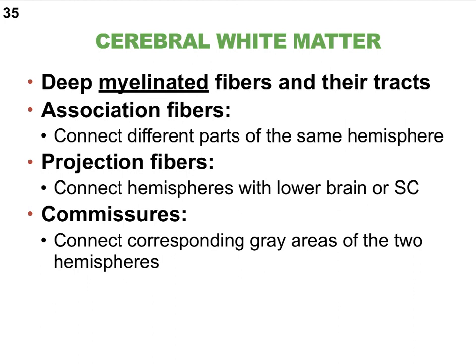We often refer to the functions of the cerebral cortex as the higher brain functions, which many other animals do not have. If we poke deeper into the cerebrum, past the cerebral cortex, the next layer we come across is the cerebral white matter. White matter is made up of myelinated fibers only — lots of myelinated axons.